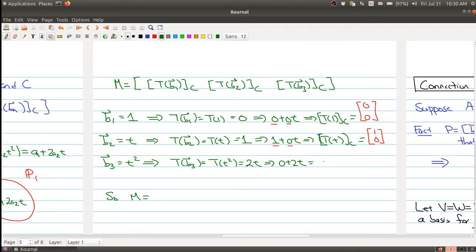And then the last guy here, T(t²) with respect to C. These are the coefficients I need, 0 and 2. So I have 0 and 2. And so I get my element (0, 2).